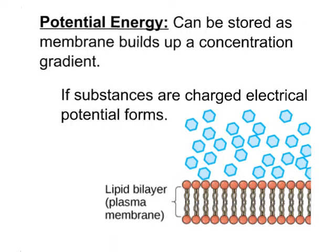Let's talk about potential energy, because potential energy can be stored as a cell membrane builds up a concentration gradient. Here we have a picture of our lipid bilayer with heads and hydrophobic tails — our plasma membrane — with some molecules on one side. If the membrane keeps those molecules on one side in a high concentration and maintains a low concentration on the other side, it is storing up potential energy. An important additional point: if those substances are charged electrically — if they are ions kept in different concentrations on each side — then we also have electrical potential that is formed.